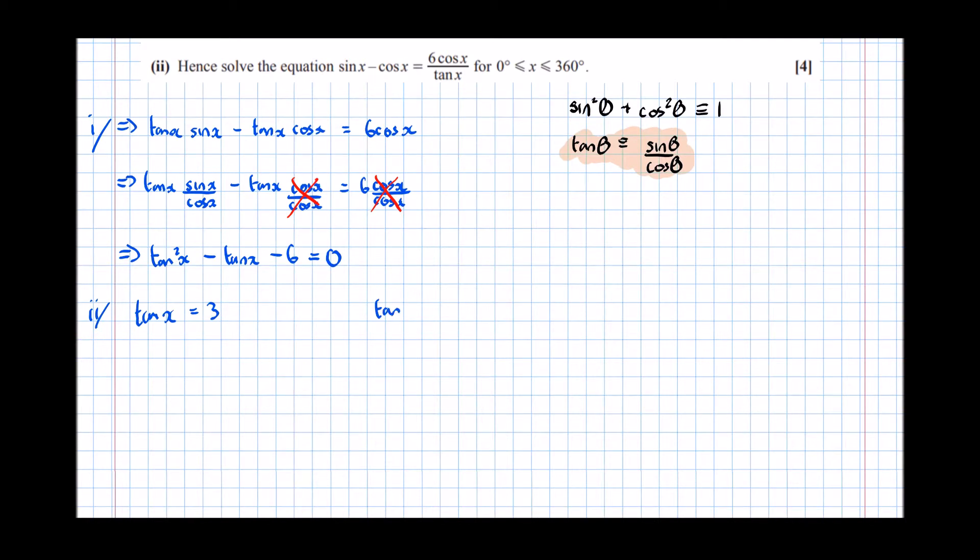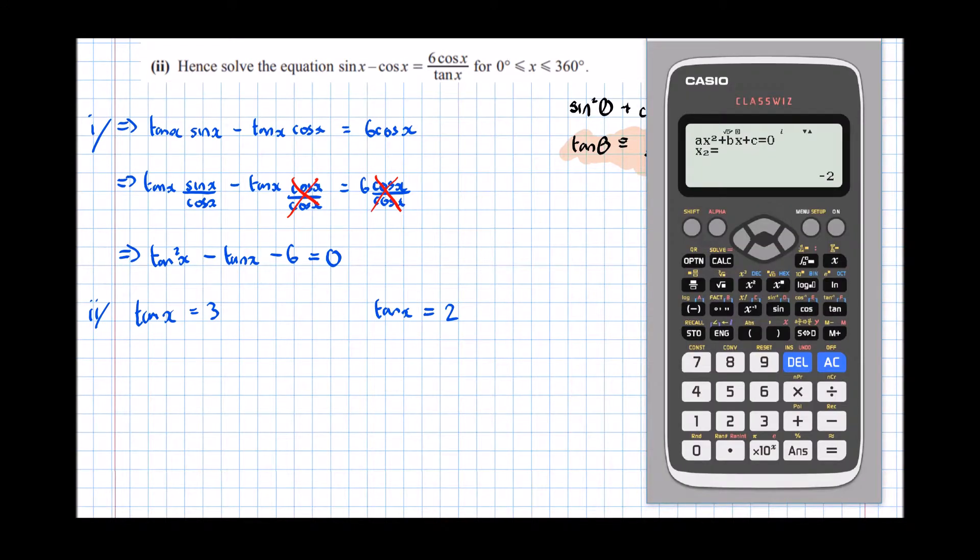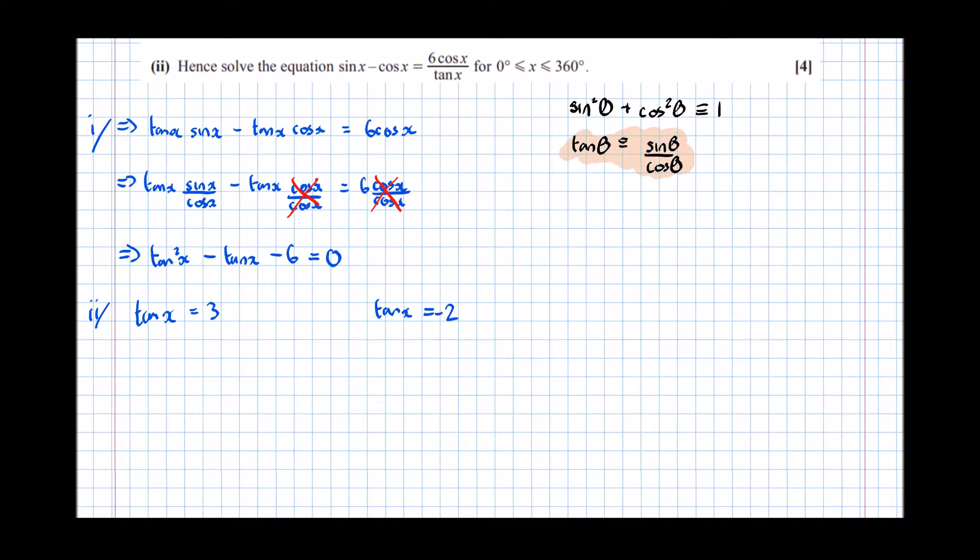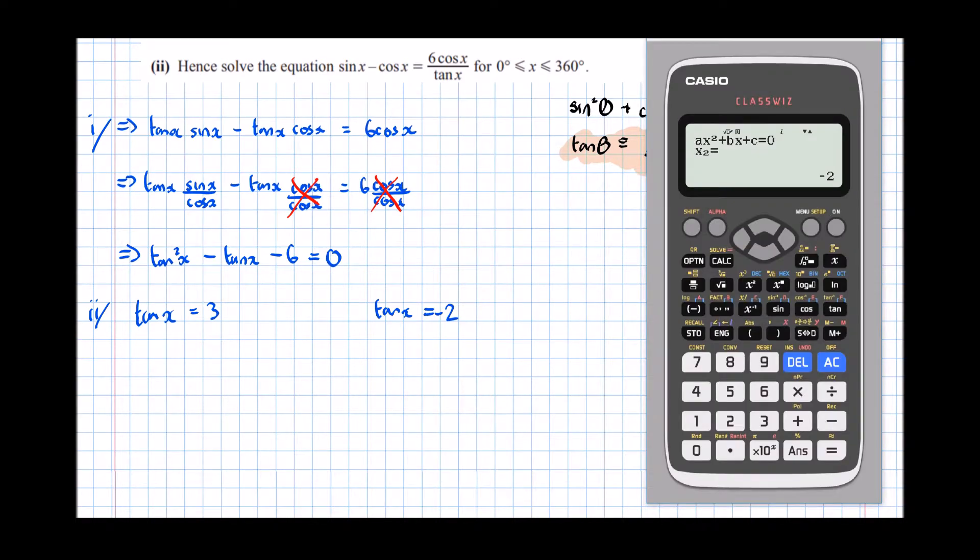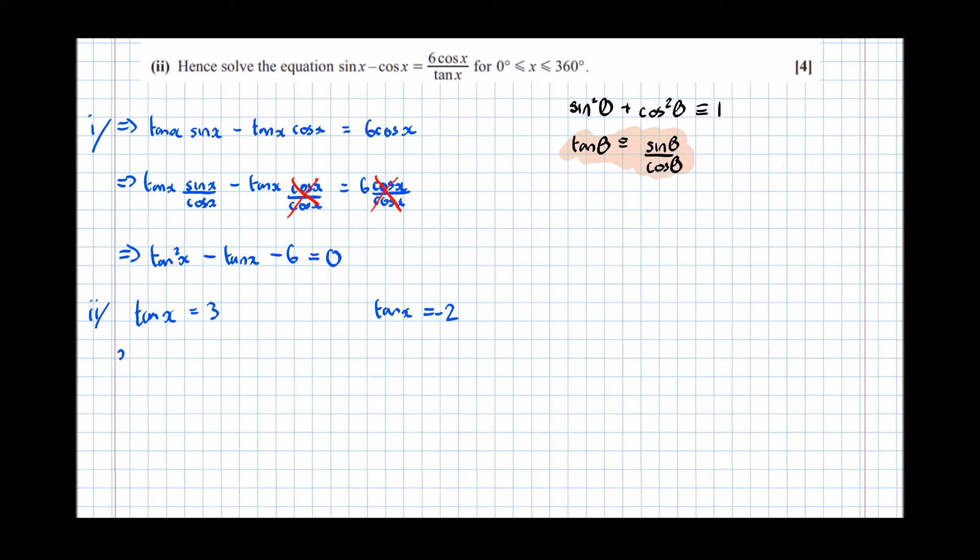So I've got two separate equations in tan x to solve now. So that was tan x equals minus 2. So finding the first solution, going back to ordinary calculator mode. So inverse tan of 3 to get our first solution is 71.565. So x equals the inverse tan of 3 which is equal to 71.565.